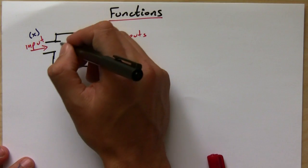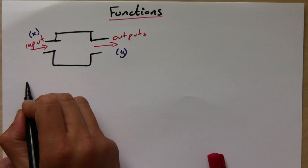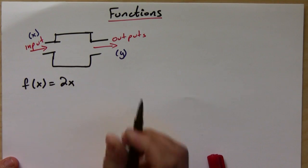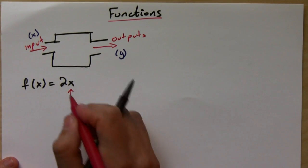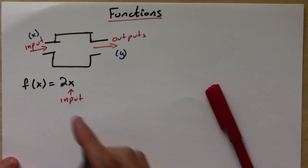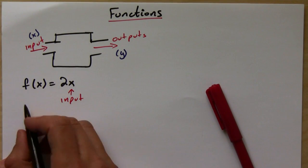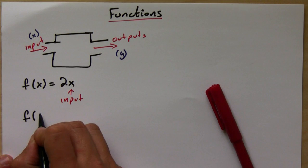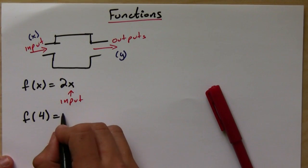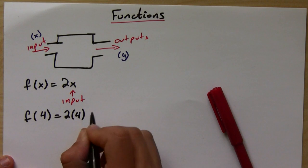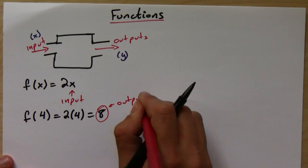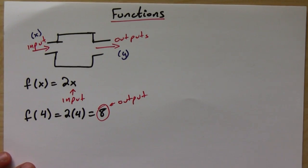This function does something. For example, this is a very simple function: f(x) = 2x. You input a number, and the output is double the number that you put in. So for example, if you want to input 4 into this function, it's going to double that number 4 and give you 8. This is the output of that function.